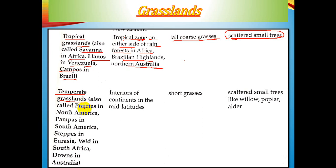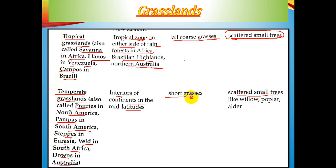Temperate grasslands also have local names across continents: prairies in North America, pampas in South America, steppes in Eurasia, veld in South Africa, and downs in Australia. These grasslands are found in the interior of continents at mid-latitudes and do not receive adequate rainfall for tree growth, so grasses are short and scattered. They are suitable for cattle and sheep rearing.